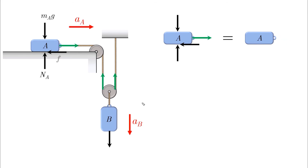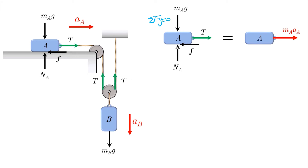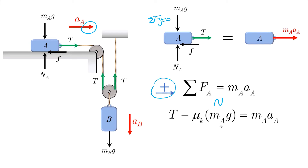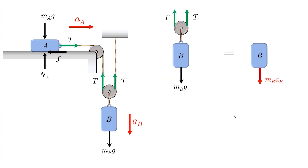Let's find the equation of motion for block A, assuming it has motion. In the y-direction, the weight equals NA, so NA equals mAg. For the equation of motion — taking rightward as positive, consistent with the assumed acceleration direction — we have: T minus friction equals mA times aA, where friction is mu_k times NA, which is mAg. This is our first equation of motion.